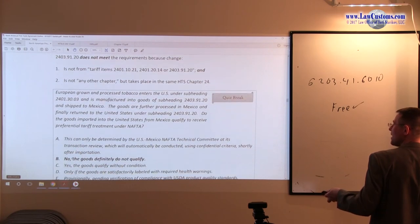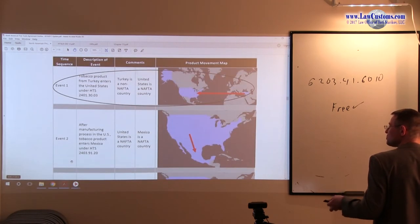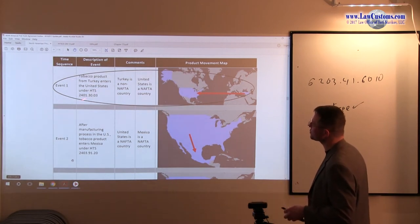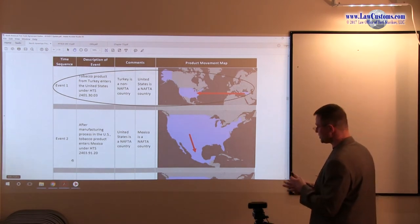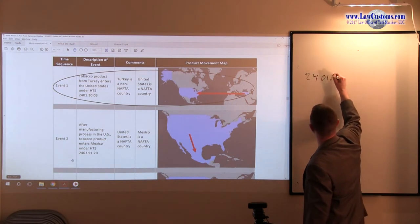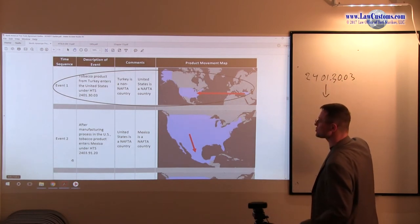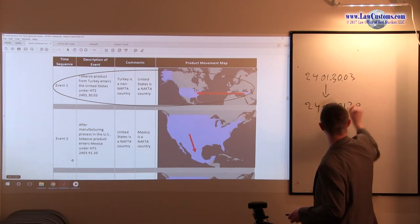I use a tobacco example because customs examiners have asked about tobacco before. You have tobacco product under HTSUS number 24.01.30.03, and it came in and was changed in the United States into the 24.03.91.20.